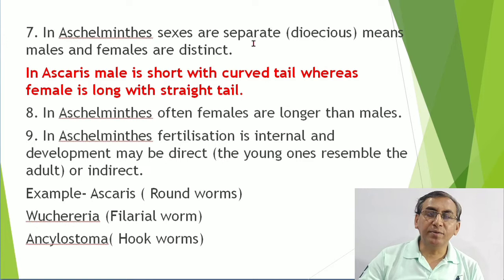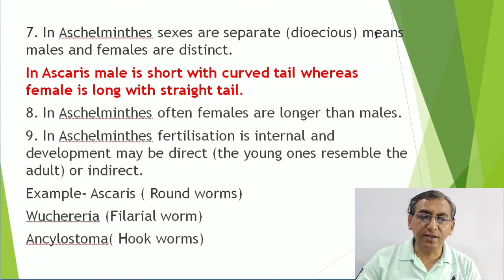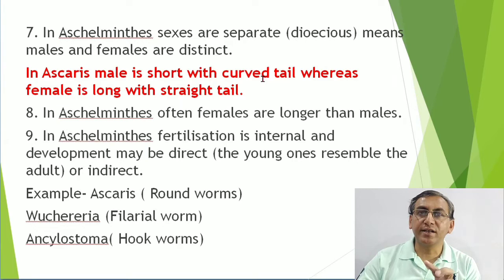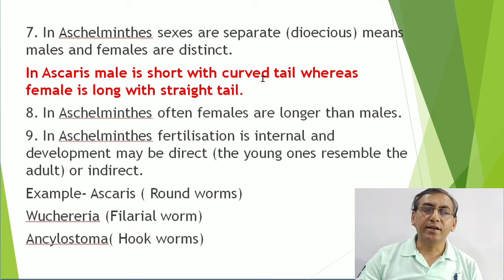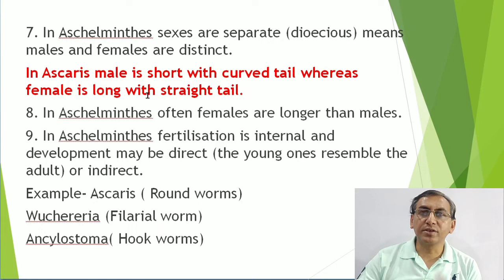Platyhelminthes are monoecious, but Aschelminthes are dioecious - meaning male and female are separate. In Ascaris, the male is short with a curved tail, which is very important, whereas the female is long with a straight tail. This means sexual dimorphism is present - identification of the sex of an individual on the basis of external characters.